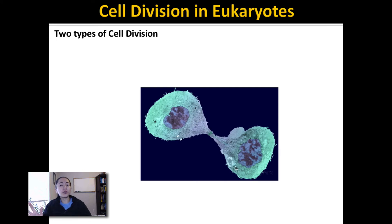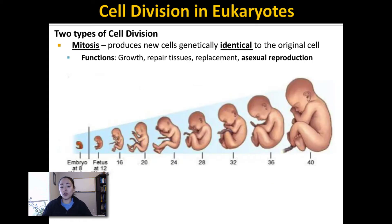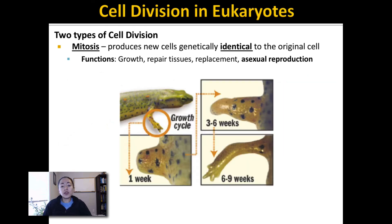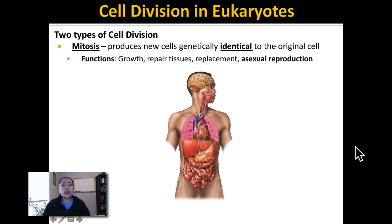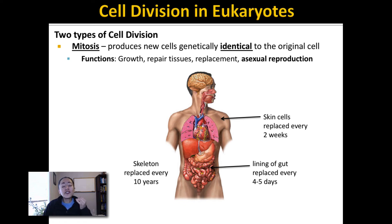Now that we understand the difference between diploid and haploid cells, let's talk about when the two different types of cell division occur in living organisms. Mitosis occurs any time an organism needs to produce new cells that are genetically identical to the original cell. Therefore mitosis will occur during normal growth and also to repair tissues — for example, this newt can regrow the cells in its limbs using mitosis. Mitosis is also used to replace cells in the body. Even when you are done growing, your body is still producing new cells constantly. For example, the cells lining your gut replace themselves every four to five days, your skin cells replace themselves every two weeks, and the cells in your skeleton replace themselves almost every 10 years — meaning that 10 years from now, you will have a completely different skeleton than you have today.